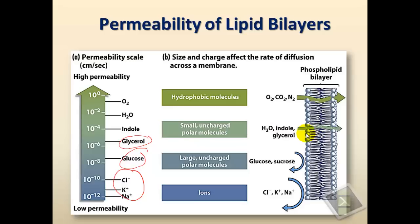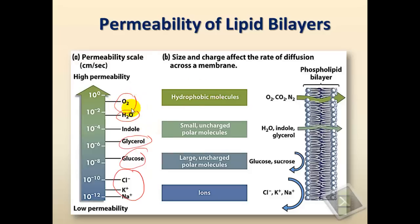Water molecules are polar and small, and therefore the membrane has very low permeability to them. Some water molecules can cross depending on the spaces between phospholipid molecules, but in general water cannot cross very easily and requires special proteins. Finally, small non-polar molecules, such as molecular oxygen, can cross very easily, and the membrane has very high permeability to those molecules.